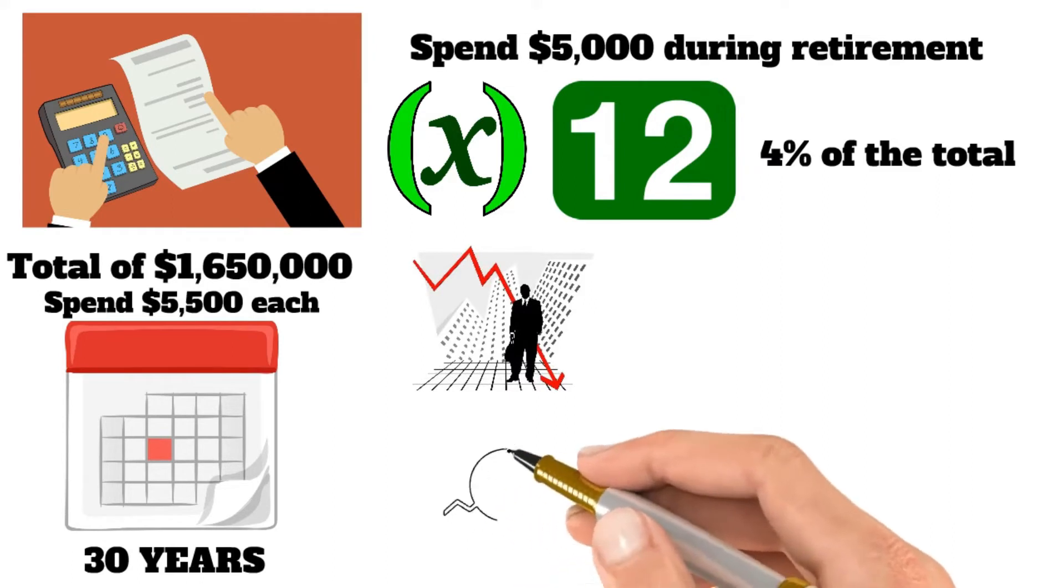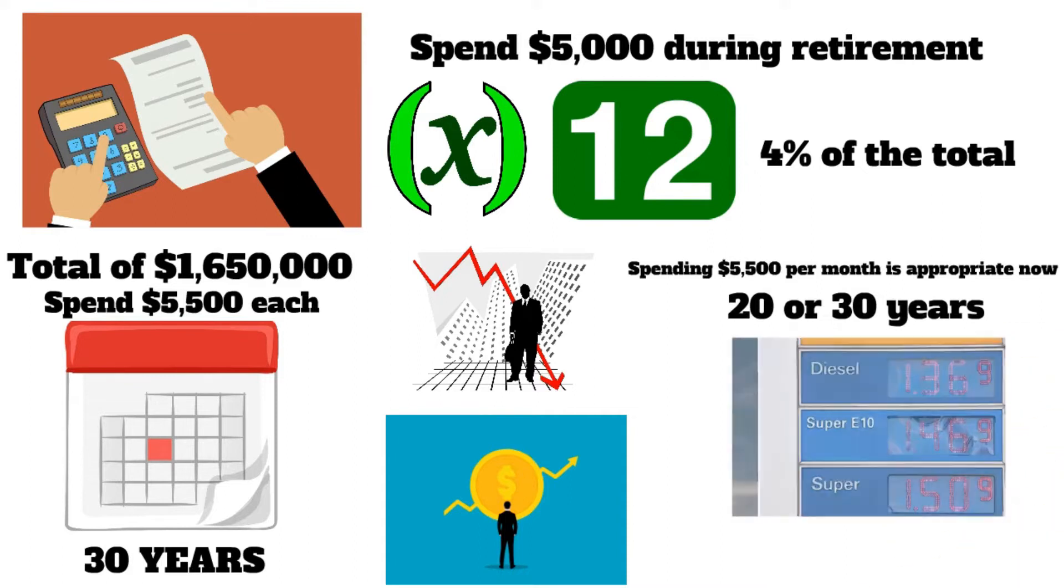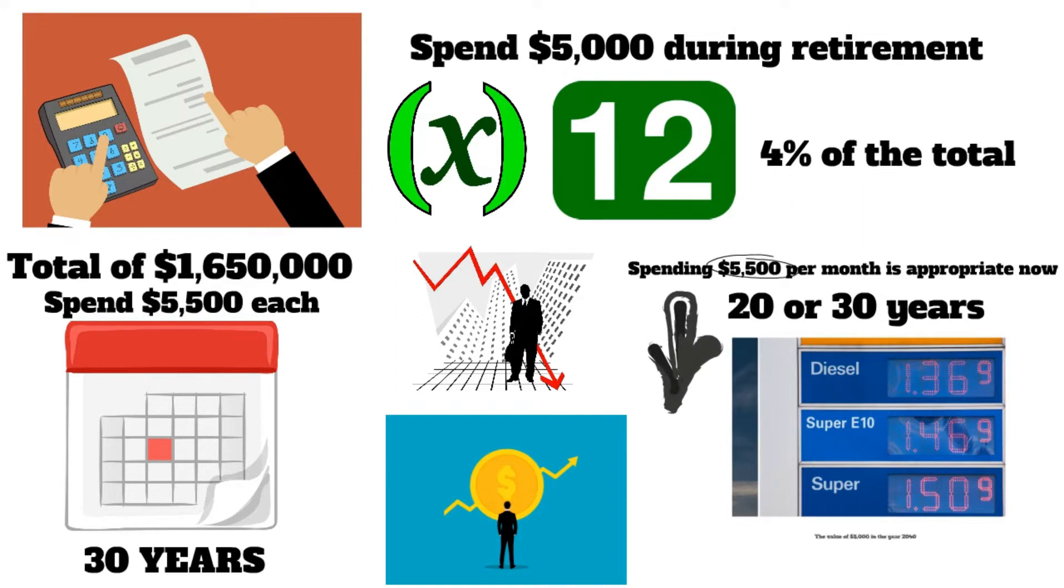Inflation may also be defined as a pace at which prices continue to rise over time. In the preceding example, you may assume that spending $5,500 per month is appropriate now. However, in 20 or 30 years, when the cost of the goods you value the most has risen, that $5,500 will be much less valuable. In fact, the value of $5,000 in the year 2040 will be almost the same as $3,500 now.